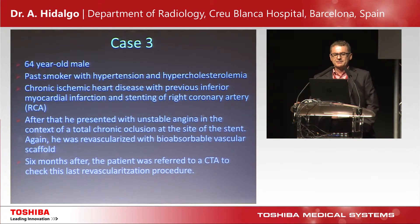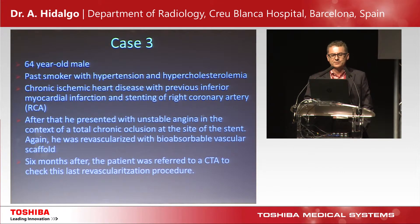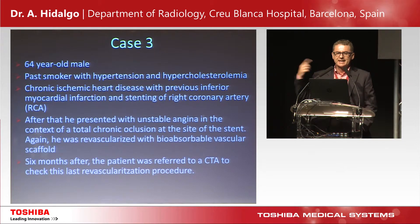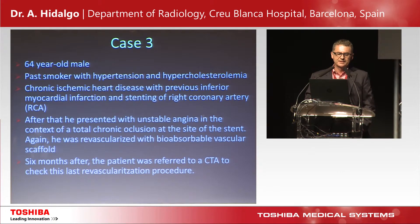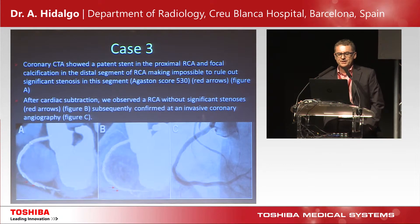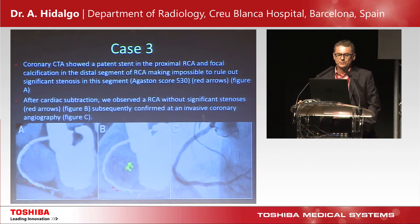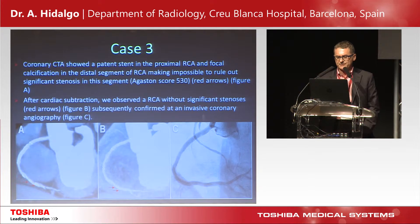This case involves a patient with chronic ischemic heart disease, a previous myocardial infarction, and a stent in the RCA who now presents with unstable angina in the context of a chronic total occlusion at the stent site, which was revascularized. Six months later, he was referred for a CTA to assess the result of the procedure. You can see the stent here, and while it is difficult to evaluate neointimal hyperplasia initially, after removing the stent with subtraction some neointimal hyperplasia is visible, though the lesions are not significant — confirmed by correlation with invasive angiography.